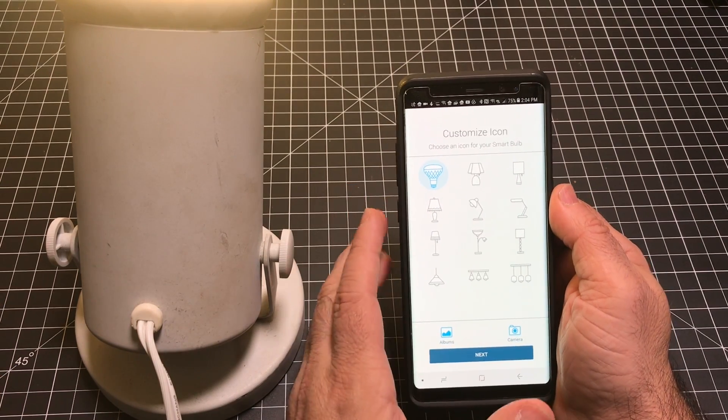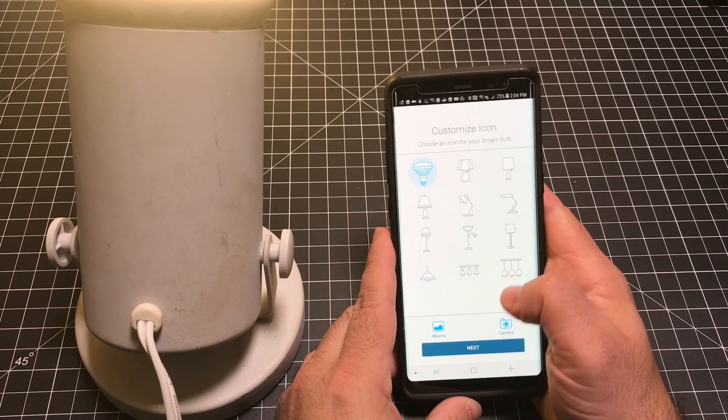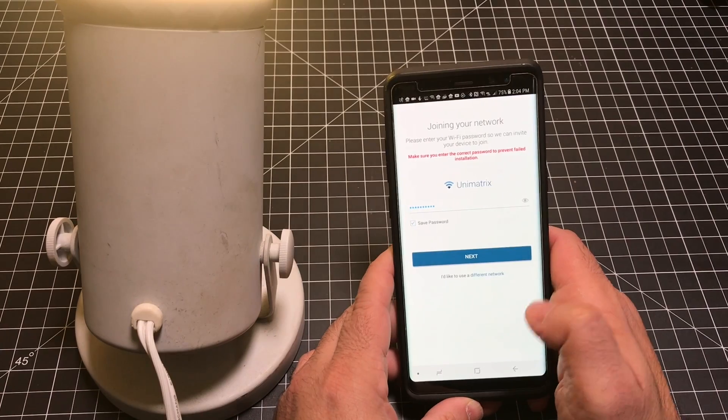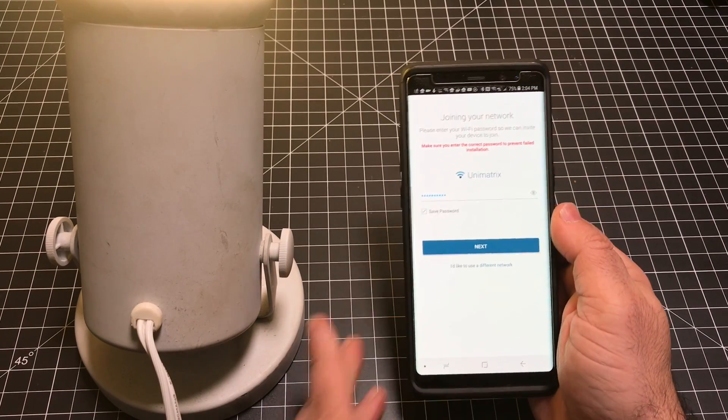Now, once the app finds the bulb, you name the bulb, which I already did. And then you just choose the symbol for it. So I'm going to go ahead and hit next. Next thing I'm going to do is configure it with my Wi-Fi.